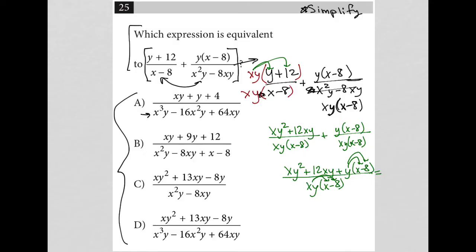So my numerator would now become xy² + 12xy + xy, y times x here, and then minus 8y all over, for the denominator, xy times x. Well, that's going to be x²y, and then xy times negative 8 becomes minus 8xy.